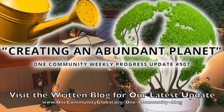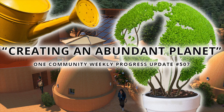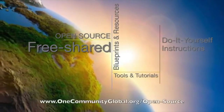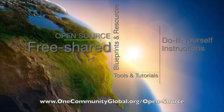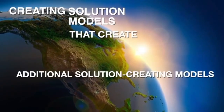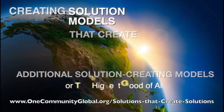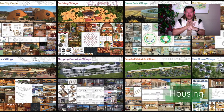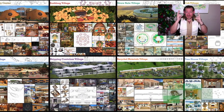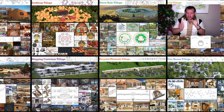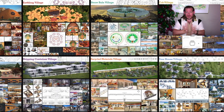Creating an abundant planet — One Community weekly progress update number 507. One Community is a 501(c)(3) non-profit organization creating open source and free shared blueprints, resources, tools, tutorials, and do-it-yourself instructions for highest good living, creating solution models that create additional solution-creating models in the service of all life on this planet. I'm Jay Stable, executive director of the One Community 501(c)(3) non-profit organization.